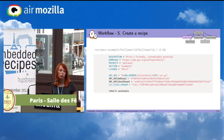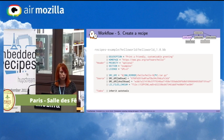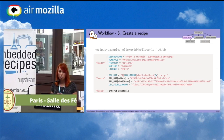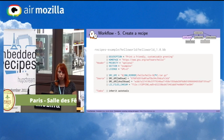Here's another example: a hello world recipe. It has the header, source, and task parts. The task part is very small — it just inherits autotools. In OpenEmbedded Core you will find a class called autotools, which has the different tasks such as do_configure to compile an autotools application. Since it's a hello world, you don't have any special configuration to do, so inheriting autotools is enough.